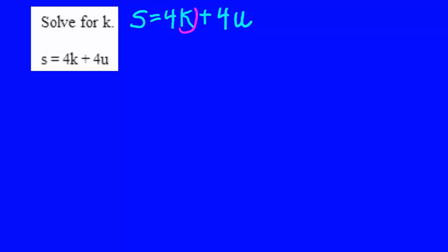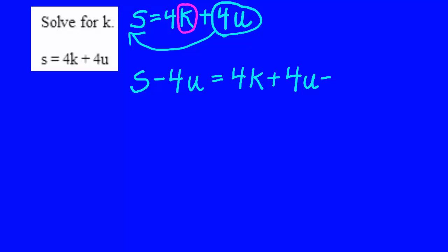Since 4u is added on to 4k, it's much easier to subtract both sides by 4u. 4u is acting like a number. I need to move it over to s, which is acting like a number. So, s minus 4u, remember I have to subtract 4u from both sides or add the opposite of 4u in order to move it. That will equal 4k plus 4u, then minus 4u. Why did I do that? Because 4u minus 4u equals 0. Therefore, I have s minus 4u equals 4k plus 0, which is just 4k.